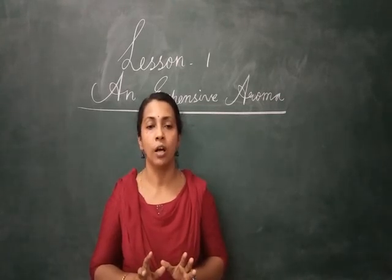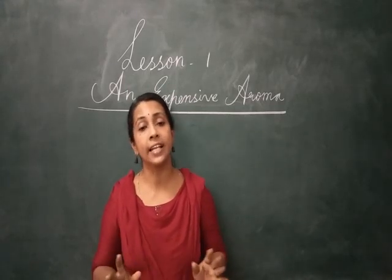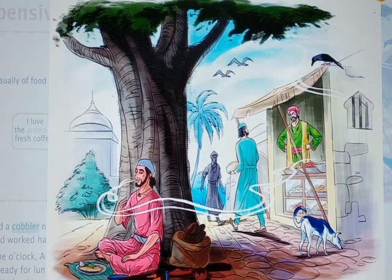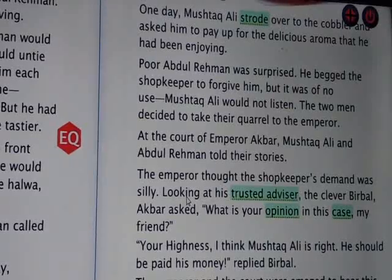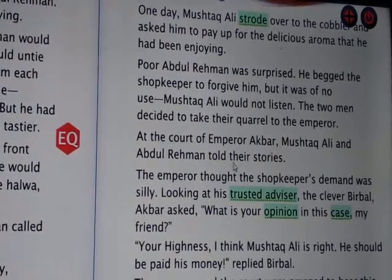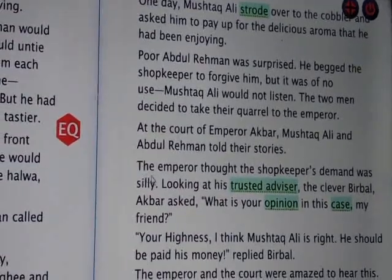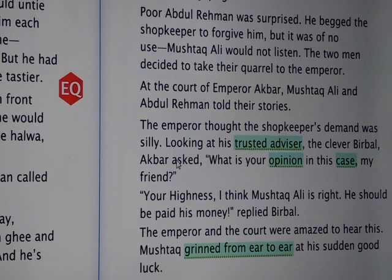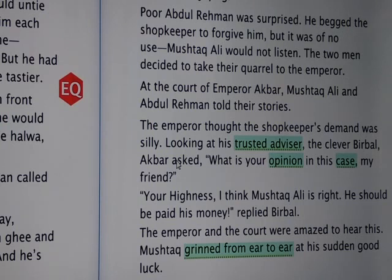Now, as you have no textbook, let's read the next part by looking at the digital content of the lesson. At the court of Emperor Akbar, Mushtaqa and Abdul Ramad told their stories. The Emperor thought the shopkeeper's demand was silly. Looking at his trusted advisor, the clever Birbal, Akbar asked, 'What is your opinion in this case, my friend?' 'Your Highness, I think Mushtaqa is right. He should be paid his money,' replied Birbal.